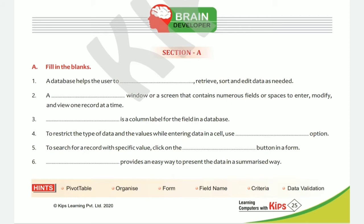Filling the blanks answers summary — First: organize. Second: form. Third: field name. Fourth: data validation. Fifth: criteria. And sixth: pivot table.